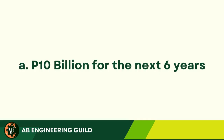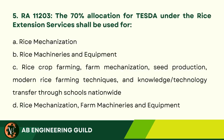Answer: A. 10 billion pesos for the next six years. Question 5: RA 11203. The 70% allocation for TESTA under the Rice Extension Services shall be used for: A. Rice Mechanization. B. Rice Machineries and Equipment. C. Rice Crop Farming, Farm Mechanization, Production, Modern Rice Farming Techniques, and Knowledge/Technology Transfer Through Schools Nationwide.